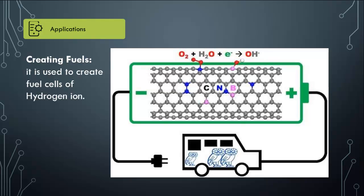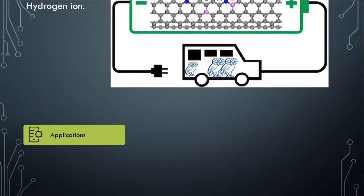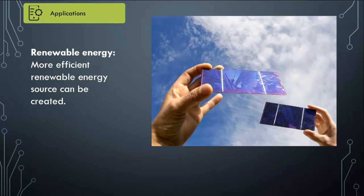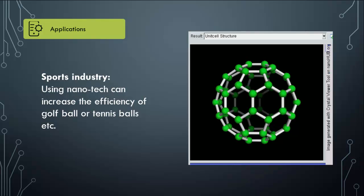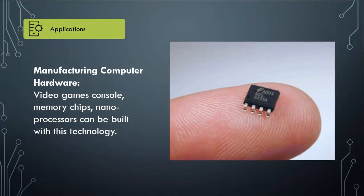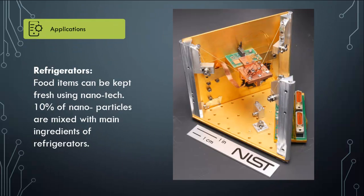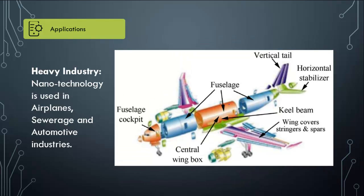Creating fuels: nanotechnology is used to create fuel cells of hydrogen ions. More efficient renewable energy sources can be created. In the sports industry, using nanotech can increase the efficiency of golf balls, tennis balls, and similar equipment. For manufacturing computer hardware, video game consoles, memory chips, and nanoprocessors can be built with this technology. In refrigerators, food items can be kept fresh using nanotech — 10% of nanoparticles are mixed with main ingredients of refrigerators. Nanotechnology is also used in airplanes, sewerage, and automotive industries.